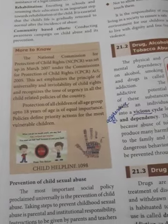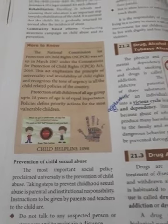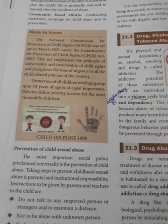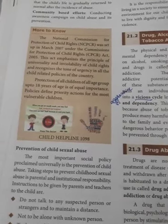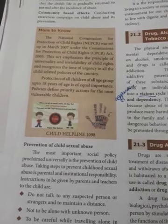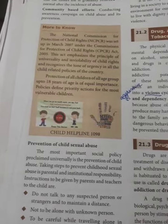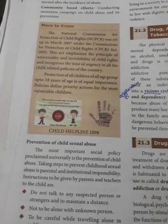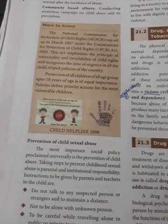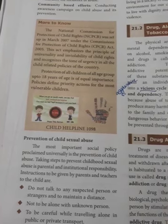Now, the next part we are going to discuss is the prevention of child sexual abuse. The most important social policy proclaimed universally throughout the world is the prevention of child abuse. Taking steps to prevent childhood sexual abuse is the responsibility of the parents and the teachers from the institution. Instructions are to be given by parents and teachers to the child.